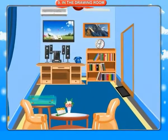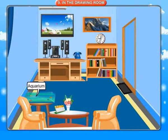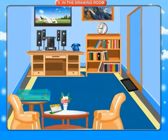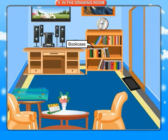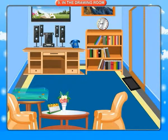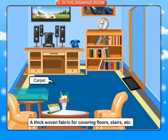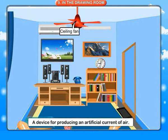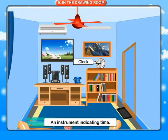In the drawing room. Aquarium: a glass tank to keep fish and plants. Book case: a cabinet of shelves for books. Carpet: a thick woven fabric for covering floors, stairs, etc. Ceiling fan: a device for producing an artificial current of air. Clock: an instrument indicating time.